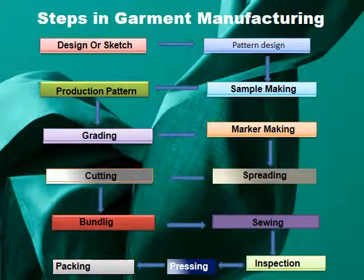The steps in the garment manufacturing process are: first, designing or sketching; then pattern design, sample making, production pattern, grading, marker making, spreading, cutting, bundling, sewing, inspection, and finally pressing and packing.